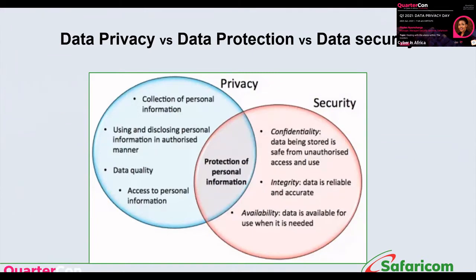This data can be your employee data, your clients' or customers' data, or even offline data — like when you enter a building and provide your ID number or phone number. Data security is the internal controls an organization sets in place to protect data from compromise by unauthorized or malicious third parties. When you merge these two, you get data protection, where an organization develops processes to safeguard information collected online or offline from corruption, compromise, or loss.